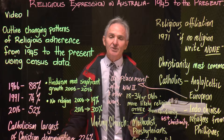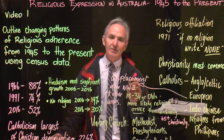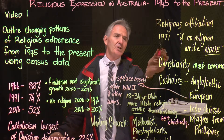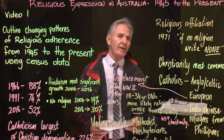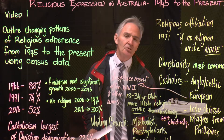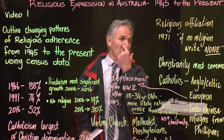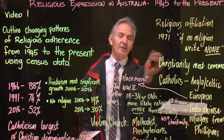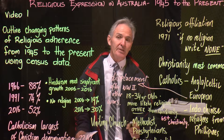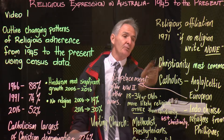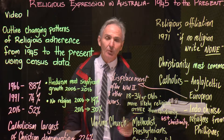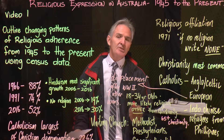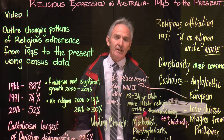Every five years there's a census and the data from that is collated. One of the questions on that talks about your religious affiliation — that is, do you believe in a religion, do you have a religion, what is it? Up until 1971 this wasn't much of an issue, but in 1971 they put on the census paper 'if no religion, write none,' and this changed the way people responded to that question.